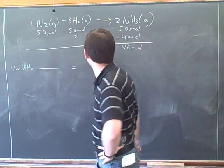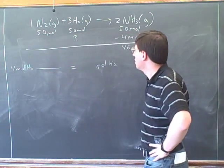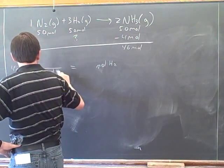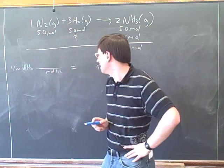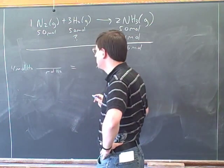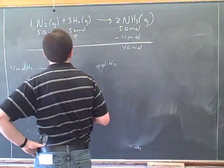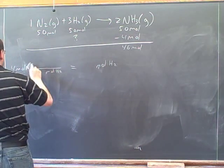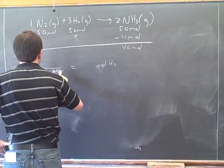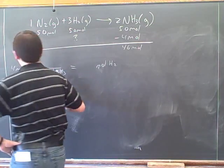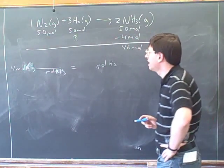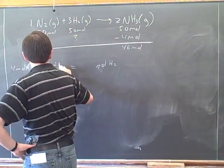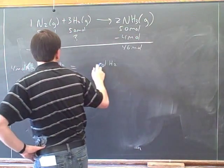And now we just have to decide what to put on the top and the bottom here. So to cancel the moles of H2, we need to put moles of H2 on the bottom. Our starting unit is moles of ammonia. So to cancel the moles of ammonia, we need moles of ammonia on the bottom. And our target units is moles of hydrogen, which will give us what we want here.